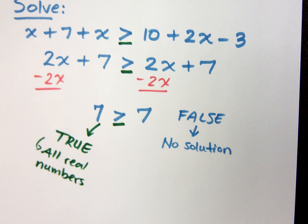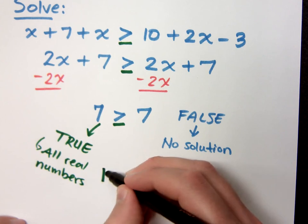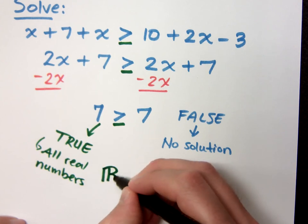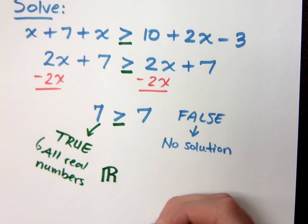That means any number that you think of, any real number, would satisfy this inequality. Now, there is another way of saying all real numbers, and that is by using this symbol right here. That's how we can represent all real numbers.